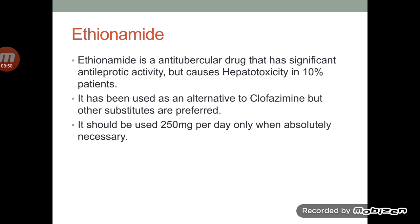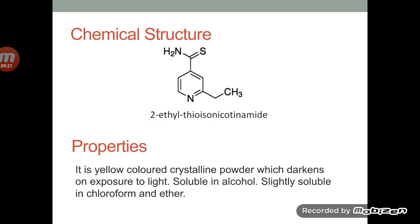The next drug used in the treatment of leprosy is ethionamide. Ethionamide is an anti-tubercular drug but it also has significant anti-leprotic properties. It causes hepatotoxicity in 10% of the patients. It is used as an alternative to clofazimine but other substitutes are also preferred. It is used at 250 mg per day only when absolutely necessary.